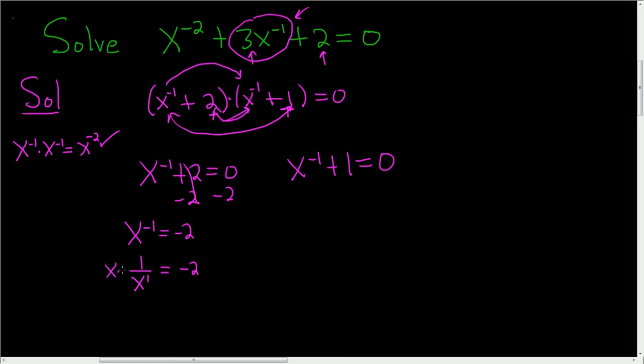Now multiply both sides by x. And so 1 is equal to negative 2x. And then to finish solving for x, just divide by negative 2. So x is equal to negative 1 half.